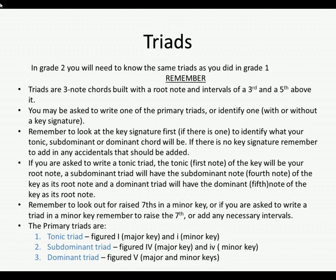If there is no key signature, remember to add in any accidentals that should be added. So they might say: please write a subdominant triad in the key of D major without a key signature. You'd look — the subdominant of D is G, and the triad is G, B, D. They don't actually need any sharps or flats, because D major has an F sharp and a C sharp, and in the subdominant triad G, B, D there would not be any Fs or Cs.